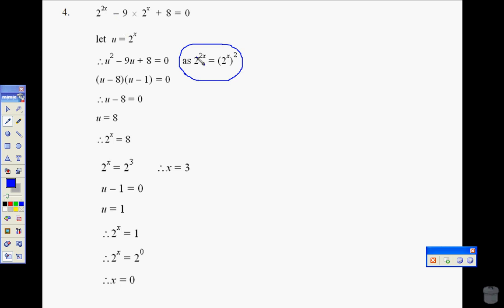2 to the power of 2x, if I write that as 2 to the power of x all squared. Now remember if we multiply, we have a bracket like that, we'd multiply the brackets, which gives us 2 to the power of x times 2. Now if I've got that, if I let u be equal to 2 to the power of x, that would be u squared. That's where the u squared comes from there, because 2 to the power of x all squared is 2 to the power of 2x.